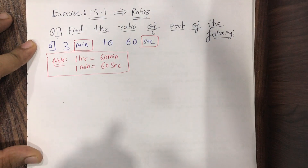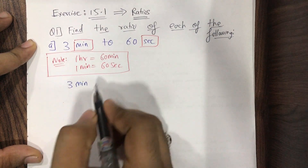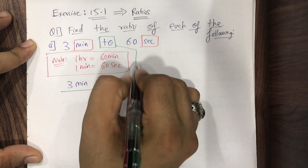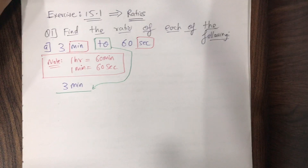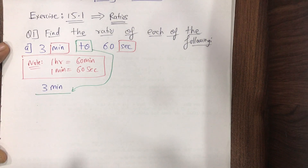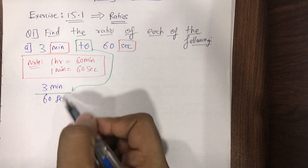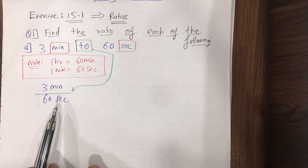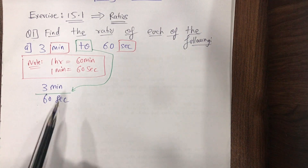Now see what I'm doing. We have 3 minutes — I write 3 minutes — and the '2' here means the 'upon' sign, like a fraction line. Below it I write 60 seconds. The most important property of ratios: in the numerator and denominator we should have the same quantities. Here the numerator is in minutes and the denominator is in seconds, so we can't leave it like this. Either both should be in minutes, or both in seconds.